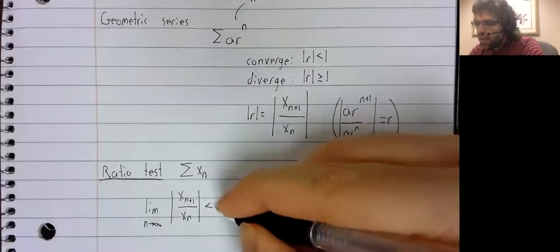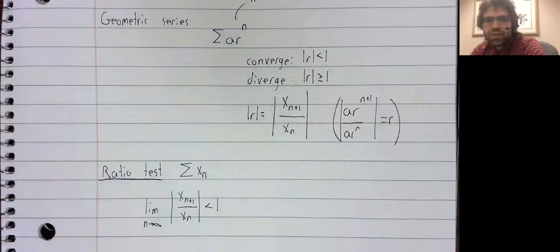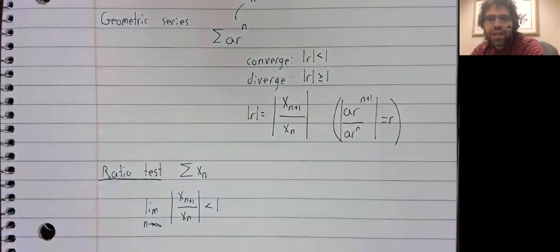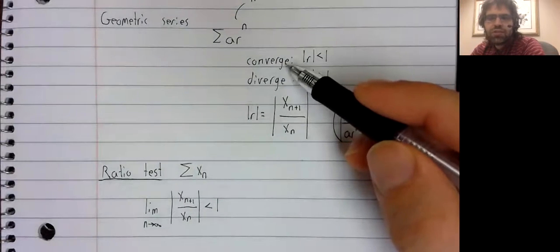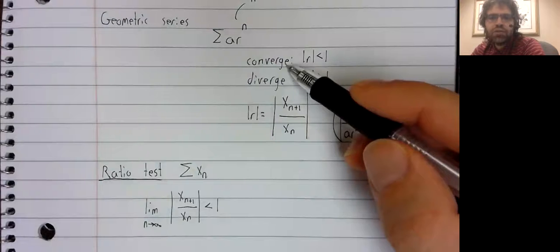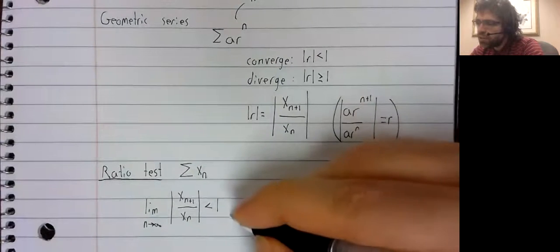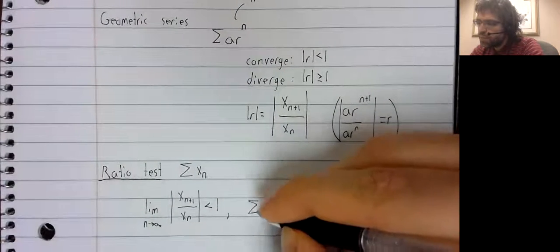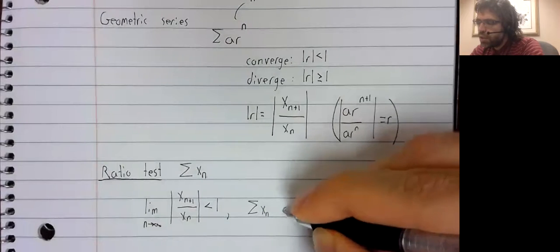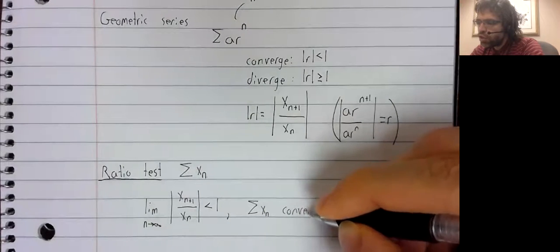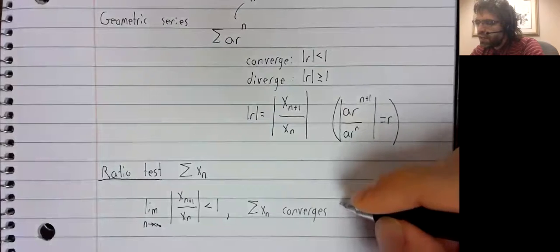And if the limit of this ratio is less than one, then just as geometric series would lead us to expect, this series converges.